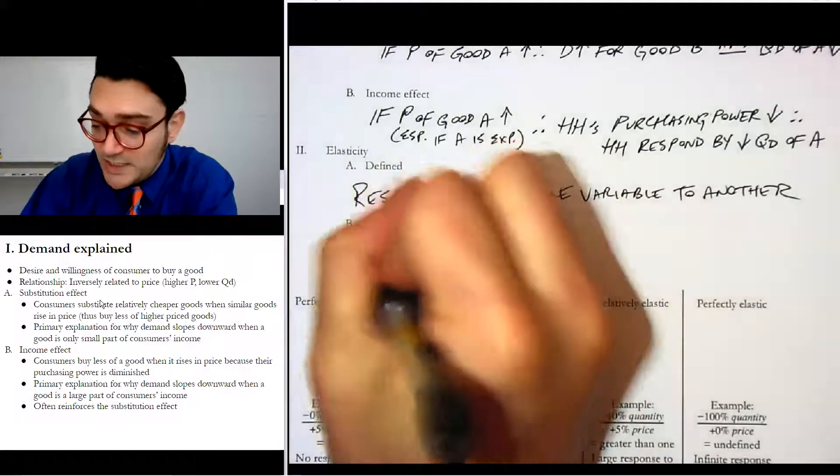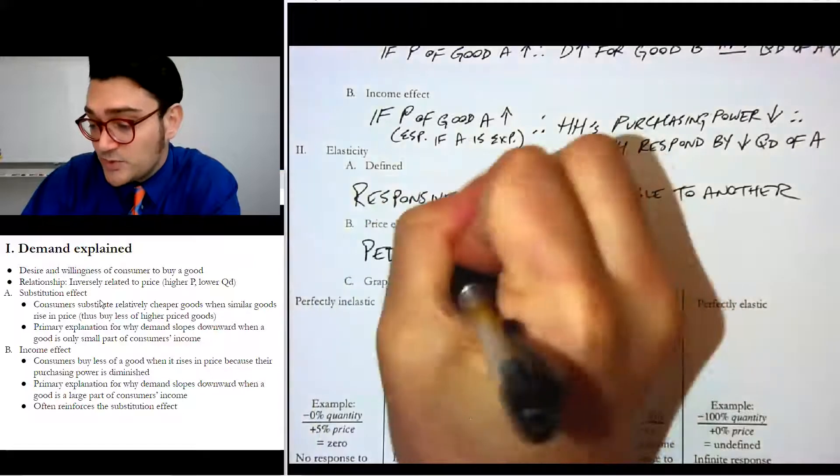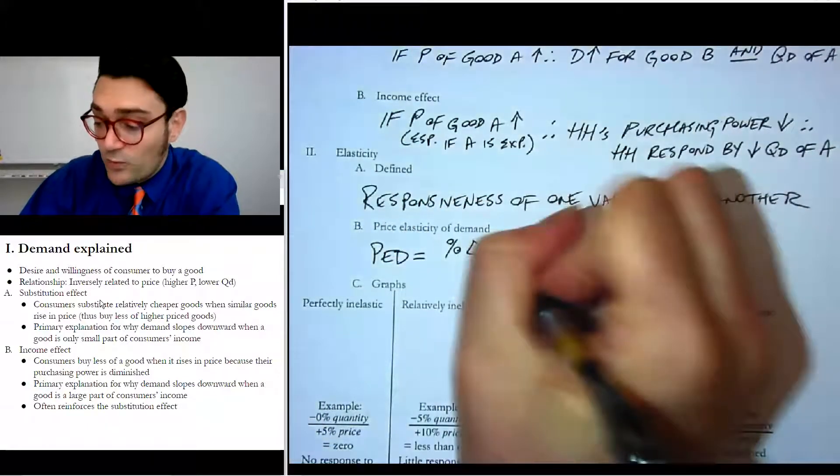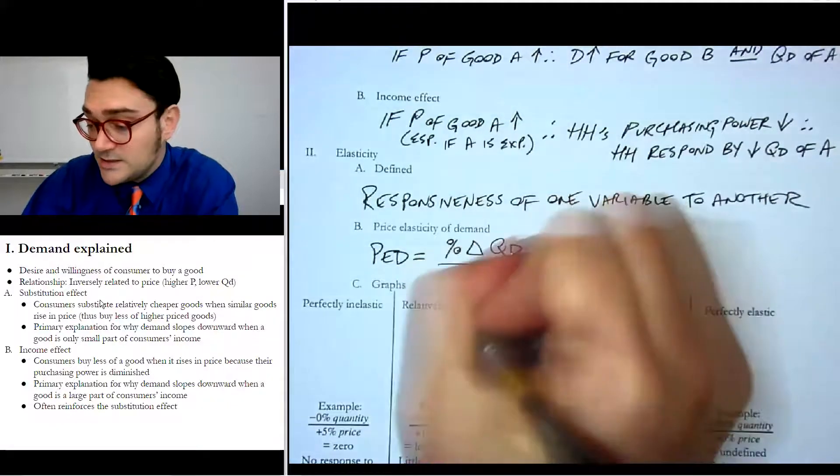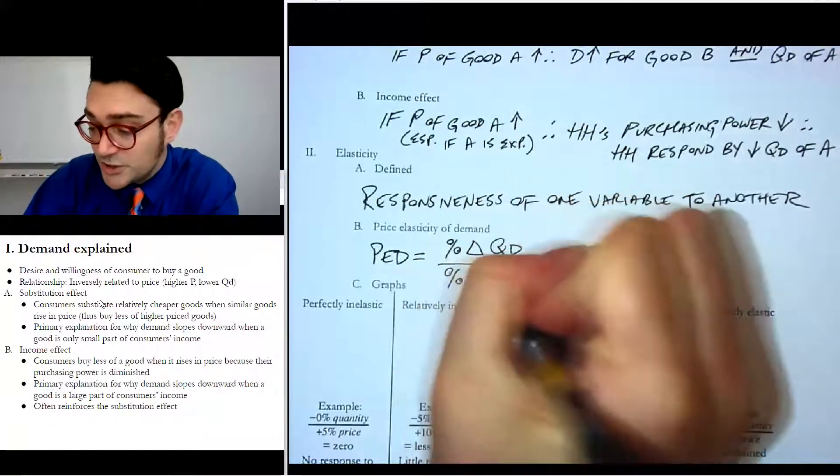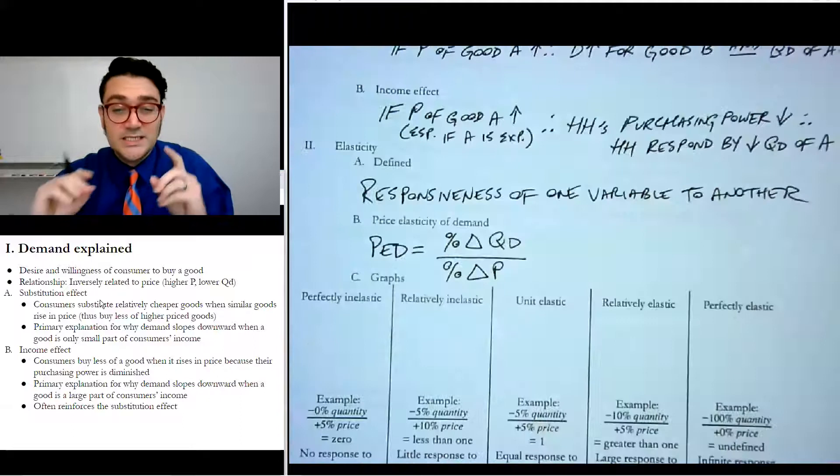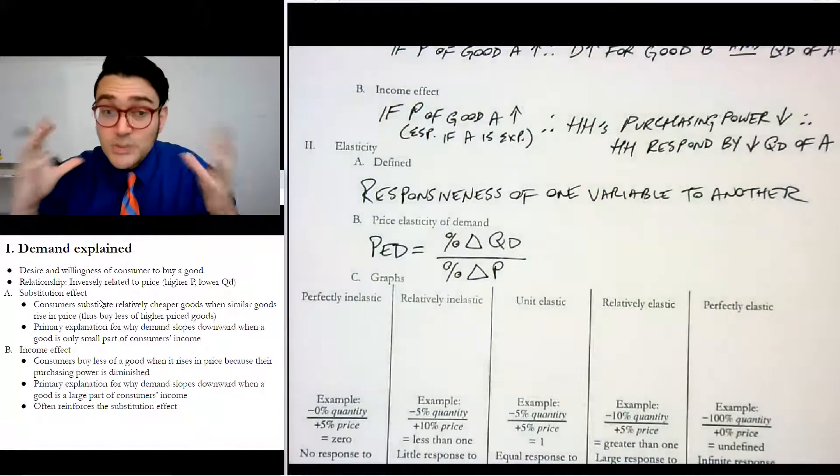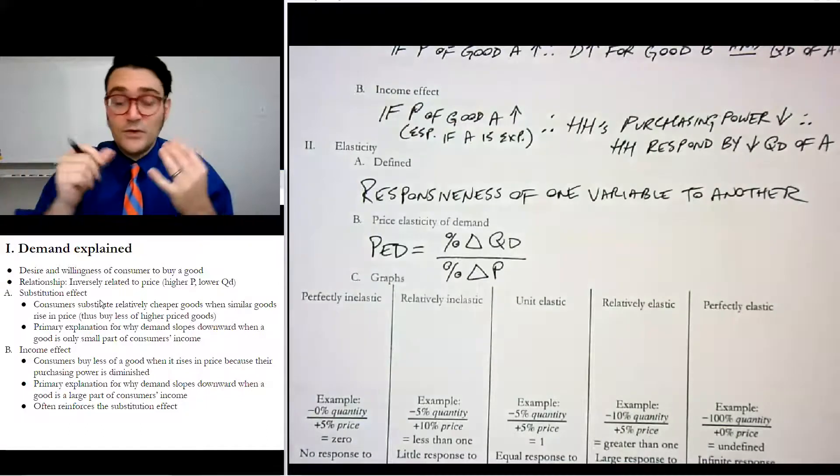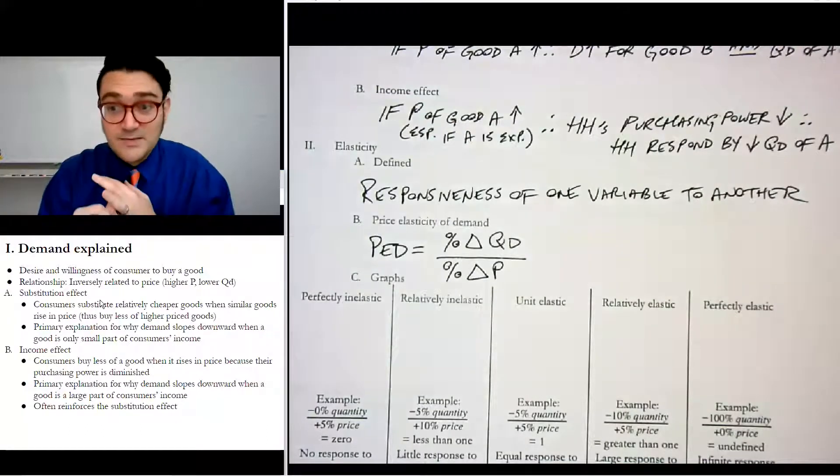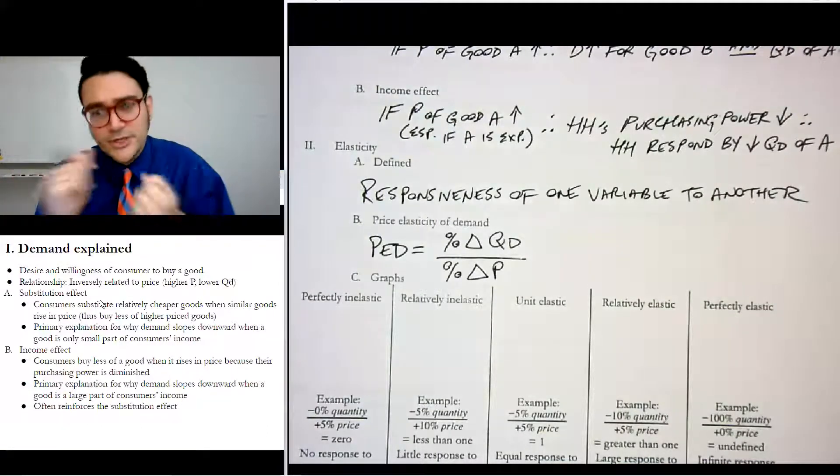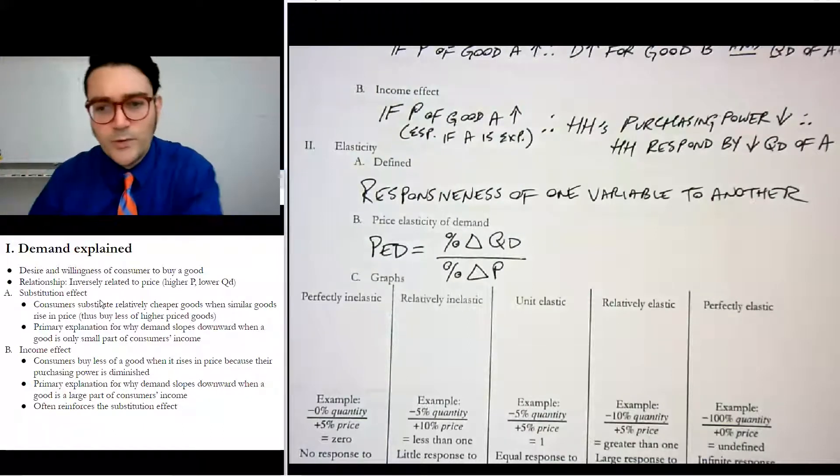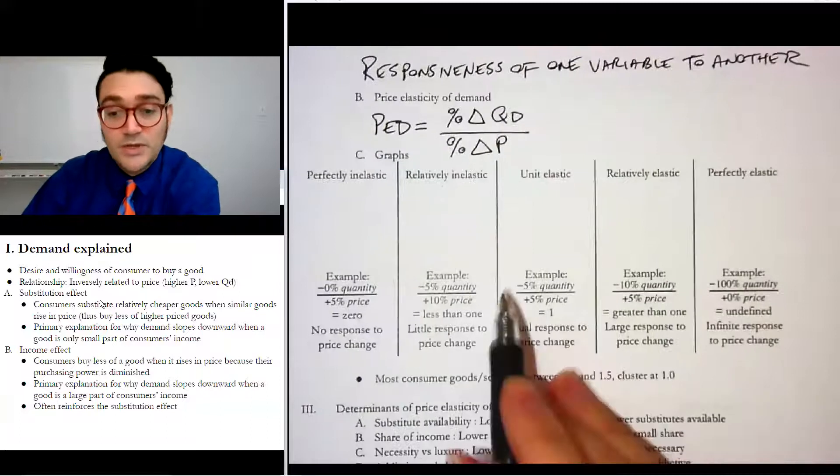So the first type of elasticity is called price elasticity of demand. PED is the percent change in quantity demanded divided by the percent change in the price. And this is really just telling us if the price changes, how much is the quantity demanded going to change? And that's really important information if you're buying a product, if you're selling products, if you're a policymaker and you're interested in how do we deal with this market of products. So let's take a look at what that looks like in practice.